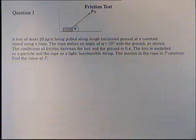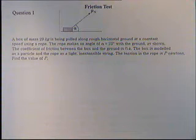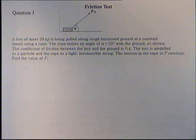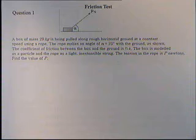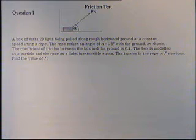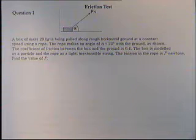The box is modelled as a particle — all questions in M1 are modelled as particles — and the rope is a light inextensible string. Light means we don't have to take into consideration the mass of the string, and it is a string, not a piece of elastic. The tension in the rope is P newtons and we've got to find the value of P.